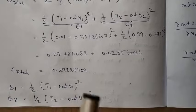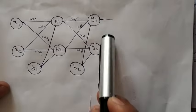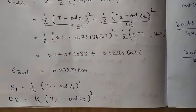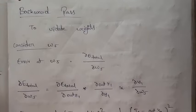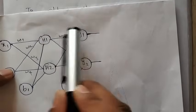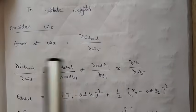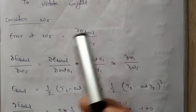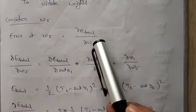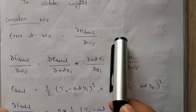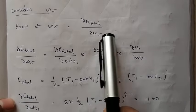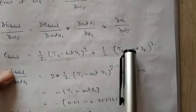We got the total error. Now we will backpropagate this error to update the weights w1, w2, w3, w4, w5, w6. For calculating the error at w5, we partial differentiate the total error with respect to w5: ∂E_total / ∂w5. But in E_total, there is no w5 term directly, so we cannot differentiate it with respect to w5 directly. So we split this into multiple terms so that we can calculate the value.